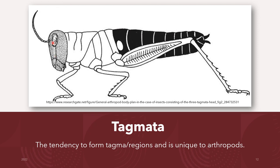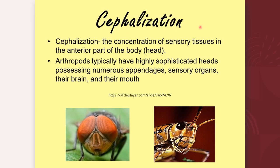The first tagma is the head, the second is the thorax, and the third is the abdomen. An example of tagmatization is cephalization, which is defined as the concentration of sensory tissues in the anterior part of the body, particularly the head. Arthropods typically have highly sophisticated heads, possessing numerous appendages, sensory organs, their brain, and their mouth.